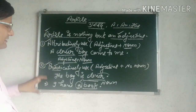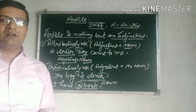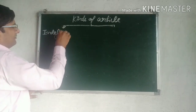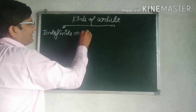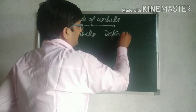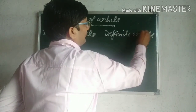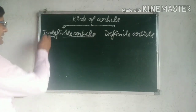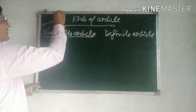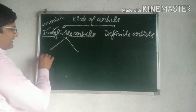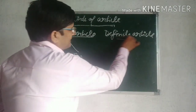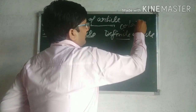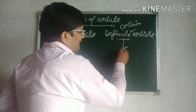Now we will move to the kinds of article. There are two types of article. The first one is indefinite article, and the second one is definite article. The article that is used before a noun to make the position of noun indefinite or uncertain is called indefinite article, which includes A and An. The article that is used before a noun to make the position of noun definite or certain is called definite article.